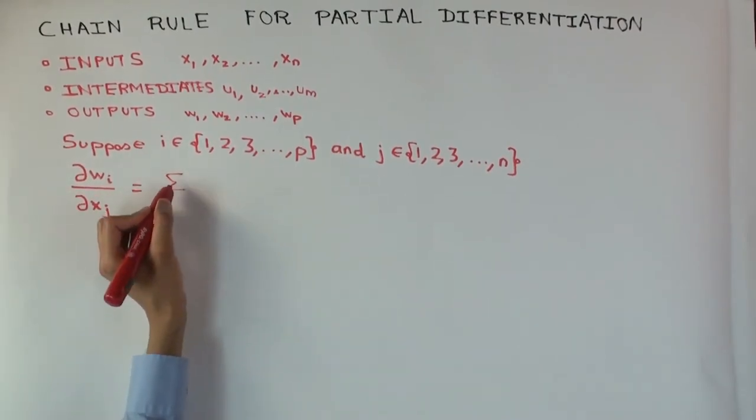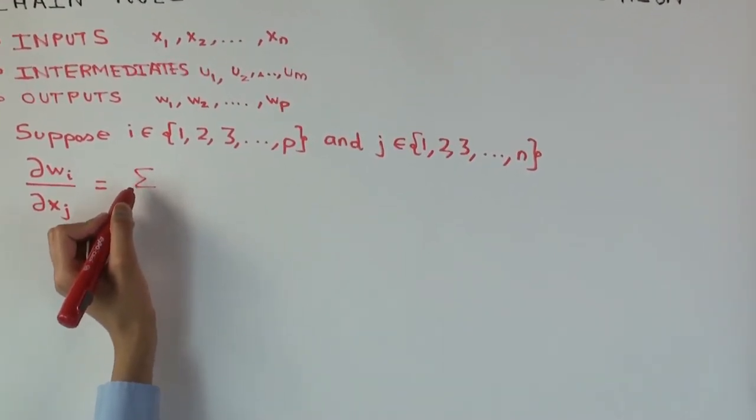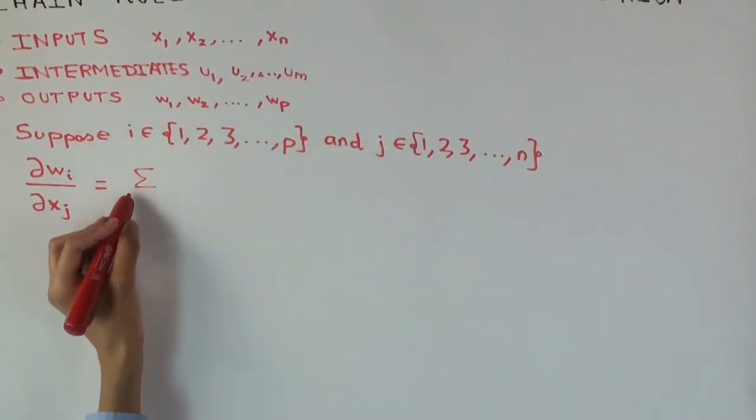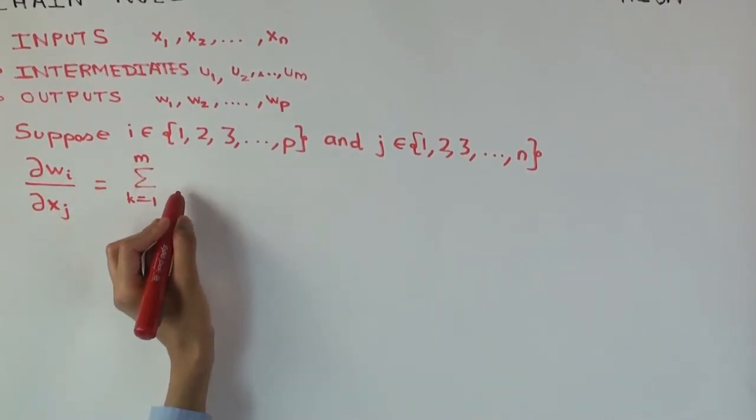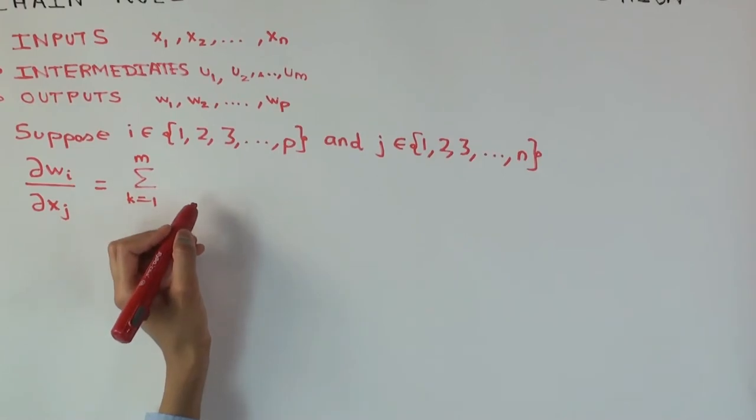So this is going to be a summation over what? We have to add up all the intermediaries. The intermediaries are from one to m, I'm going to use another letter k for the dummy variable of summation, k equals one to m. What's this going to be? The partial derivative of uk with respect to xj.